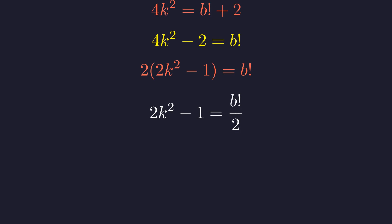The left side is odd. Therefore, the right side, B factorial divided by 2, must also be odd. If B is 2, B factorial divided by 2 is 1, which is odd. If B is 3, B factorial divided by 2 is 3, which is odd. For any B greater than or equal to 4, B factorial contains factors 1, 2, 3, and 4, meaning B factorial divided by 2 will be even. So we only need to check B equals 2 and B equals 3.